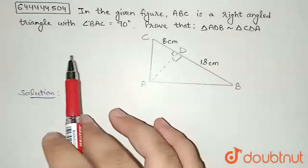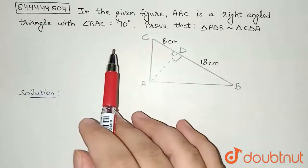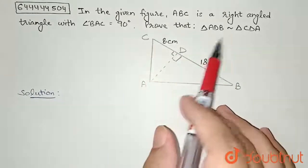In the given figure, ABC is a right angle triangle with angle BAC equal to 90 degrees. Prove that triangle ADB is similar to triangle CDA.